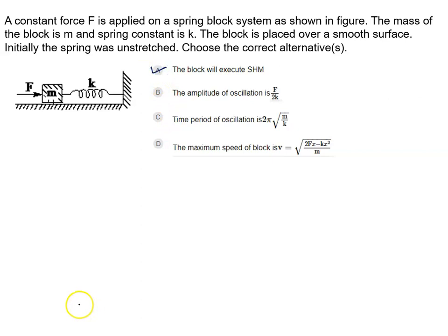Amplitude of oscillation: the F force can maximum compress the spring by a distance A. So amplitude of oscillation is given by F by K. So this option is wrong.